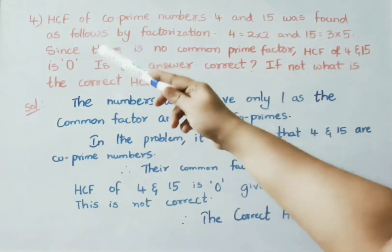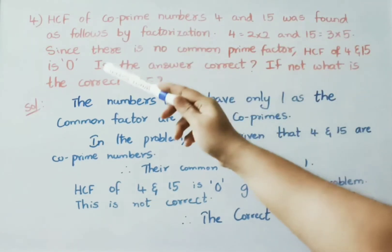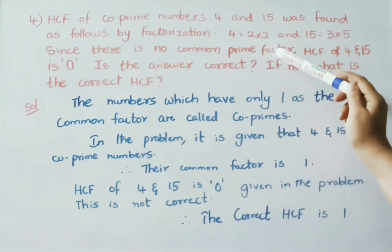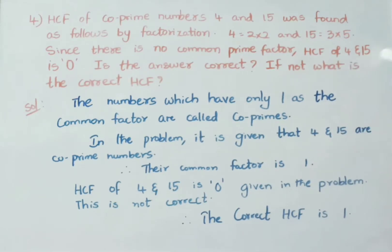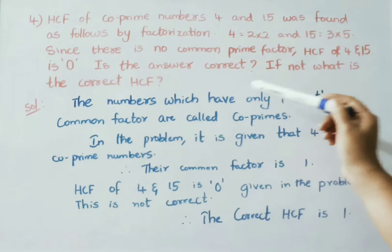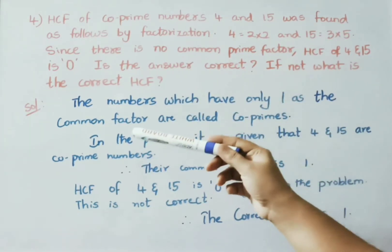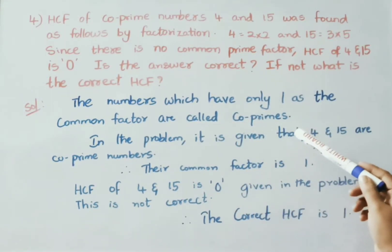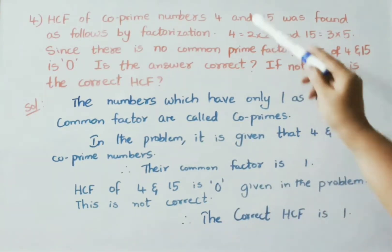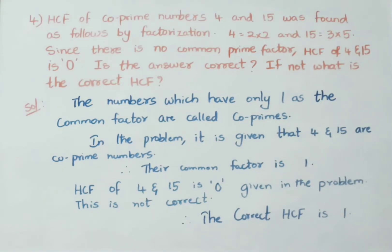See now, fourth sum. HCF of co-prime numbers 4 and 15 was found as follows by factorization: 4 means 2 into 2 and 15 means 3 into 5. Since there is no common prime factor, HCF of 4 and 15 is 0. Is the answer correct? If not, what is the correct HCF? See the solution. The numbers which have only 1 as the common factor are called co-primes. So, in this problem it is given that 4 and 15 are co-primes. So, their common factor is 1. But in the problem they have given HCF of 4 and 15 is 0. So, this is not correct. Therefore, the correct HCF is 1.